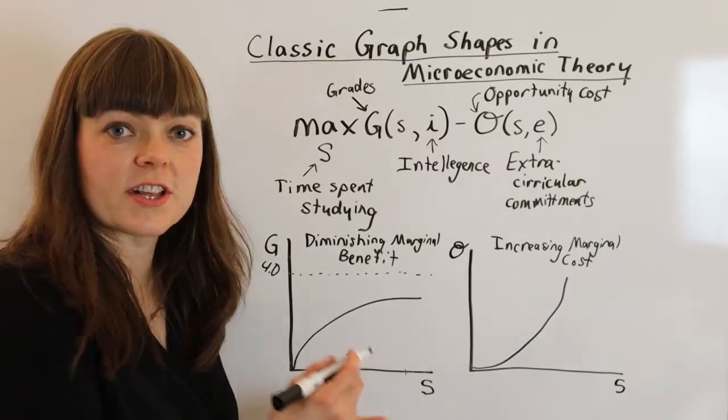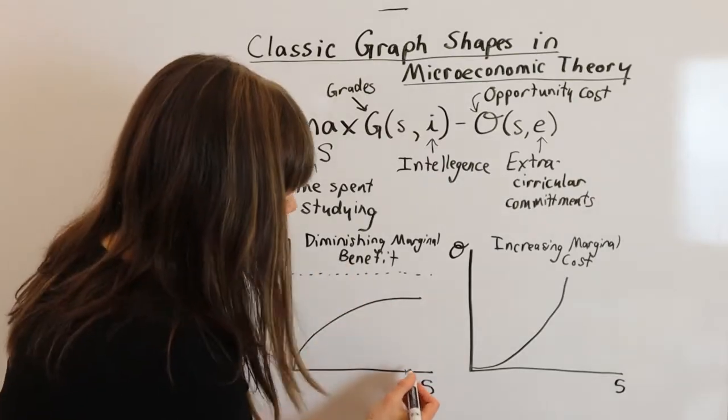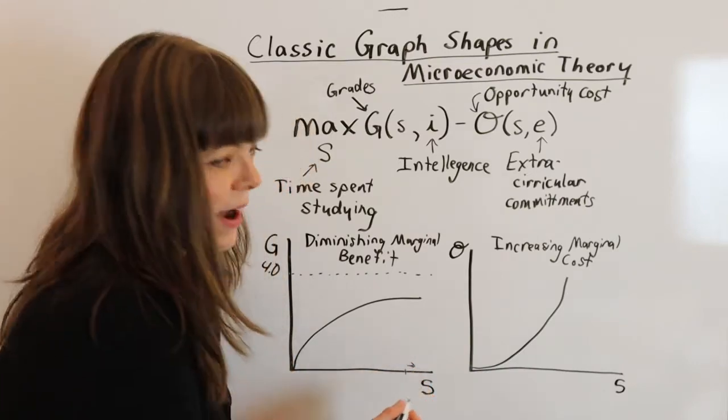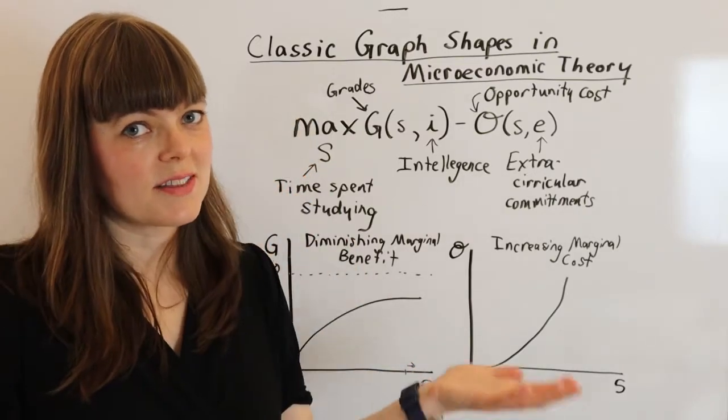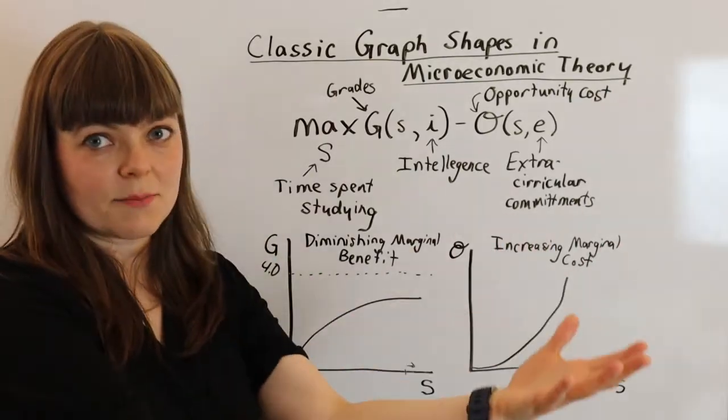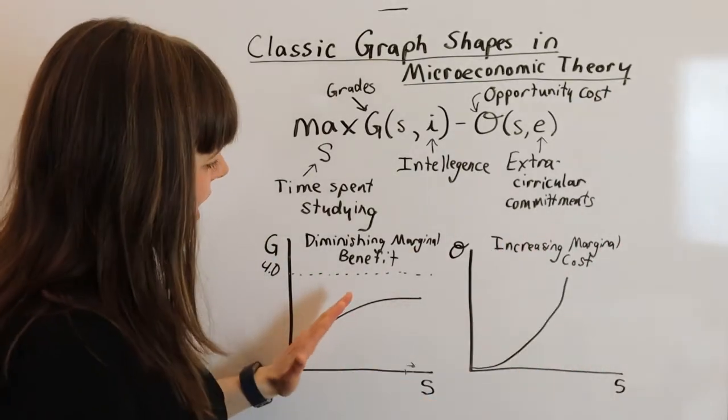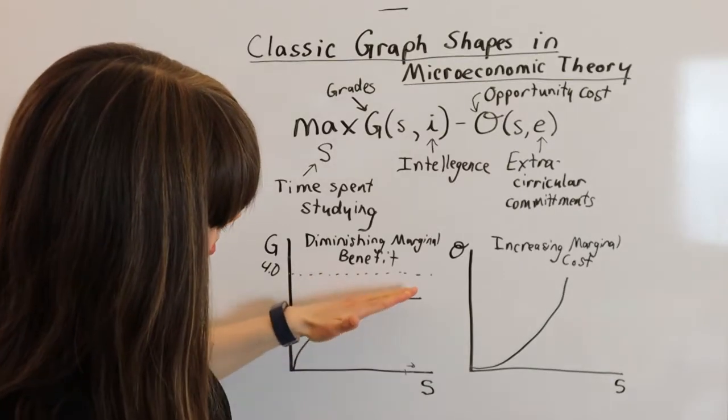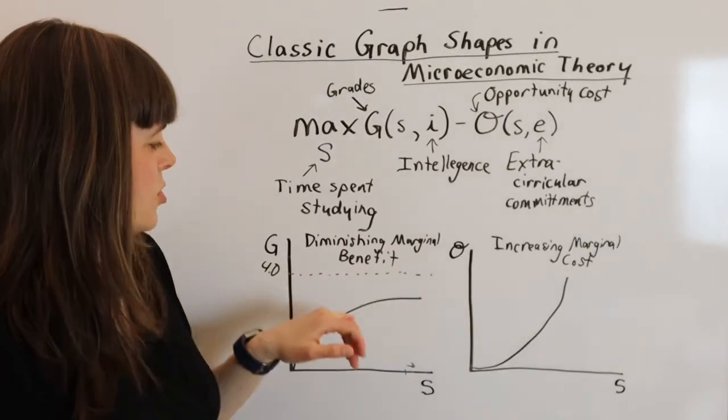But of course, if you're out here and you've already studied 10 hours, that 10th and a half hour, that extra half hour is going to be less valuable because you've already studied everything that's really important and you're studying the less important things as you move along. So we're going to have this diminishing marginal benefit shape to the graph.